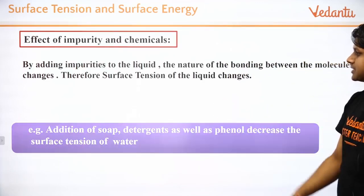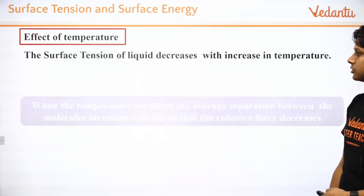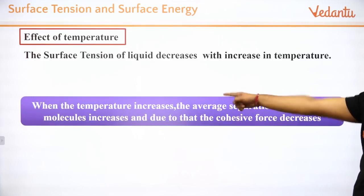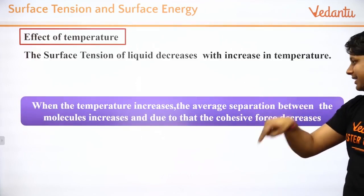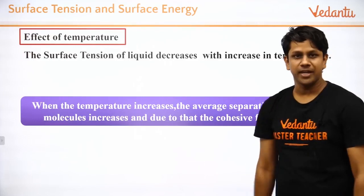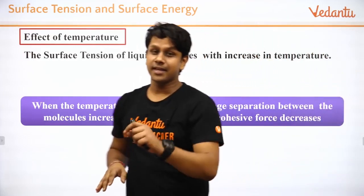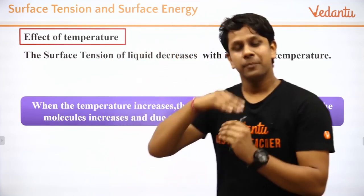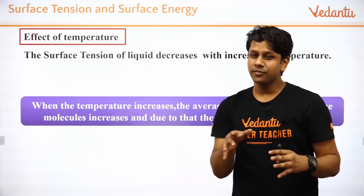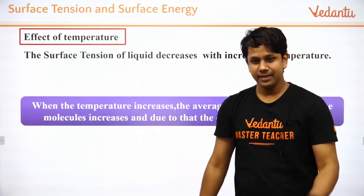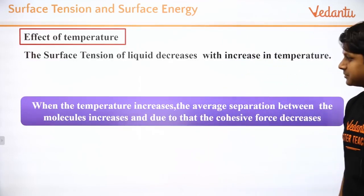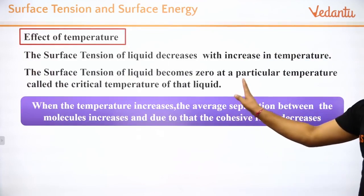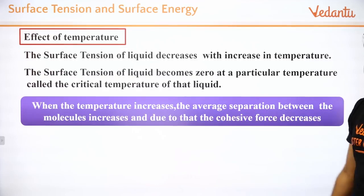When you add soap or detergent to water for washing clothes, surface tension decreases. If surface tension is very high, water cannot penetrate the fabric — a drop just sits on top. Adding detergent lowers the surface tension, so water goes inside the cloth and cleaning is better. Temperature also affects surface tension — increasing temperature decreases surface tension because cohesive force decreases.